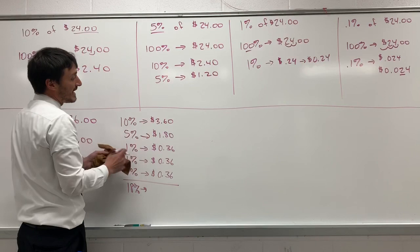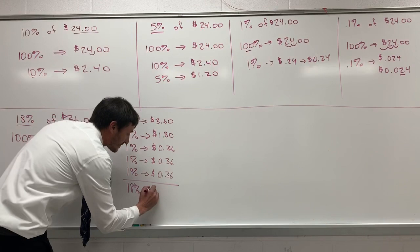360 plus 180 is $5.40. 36 three times is $1.08. So, I have a total of $6.48.